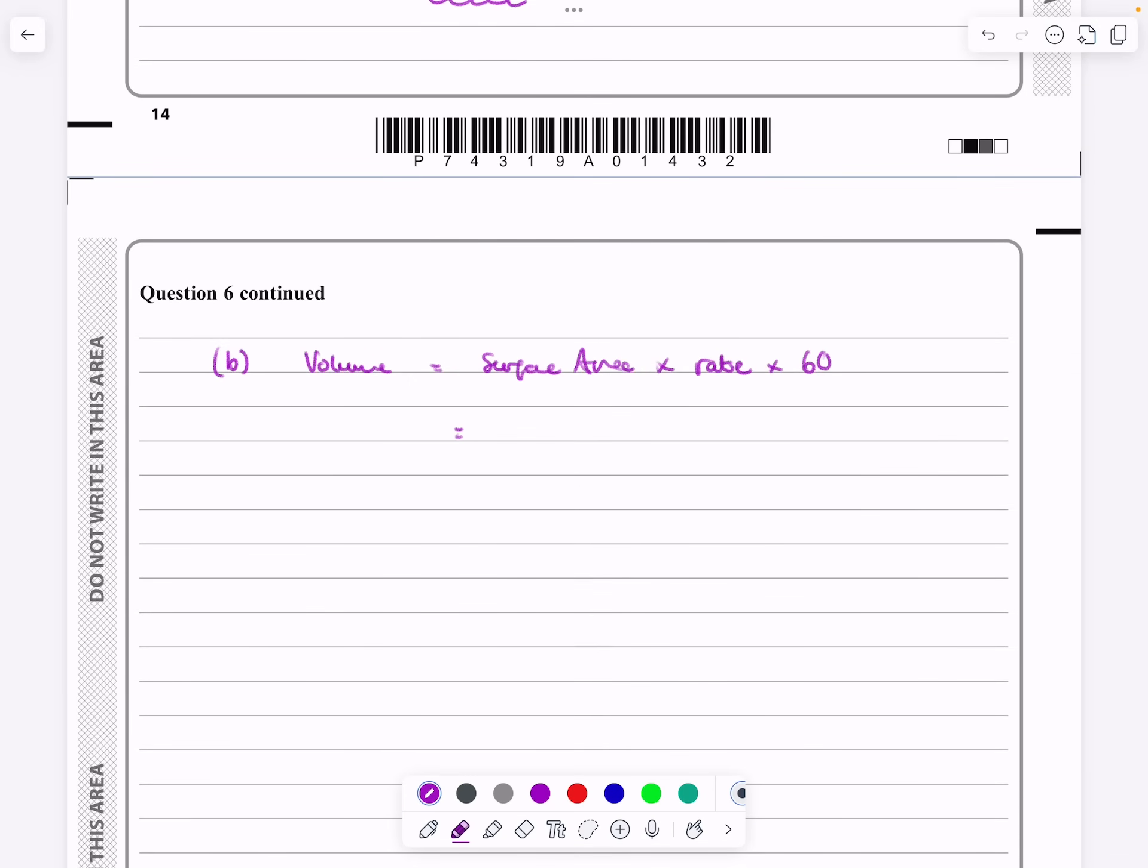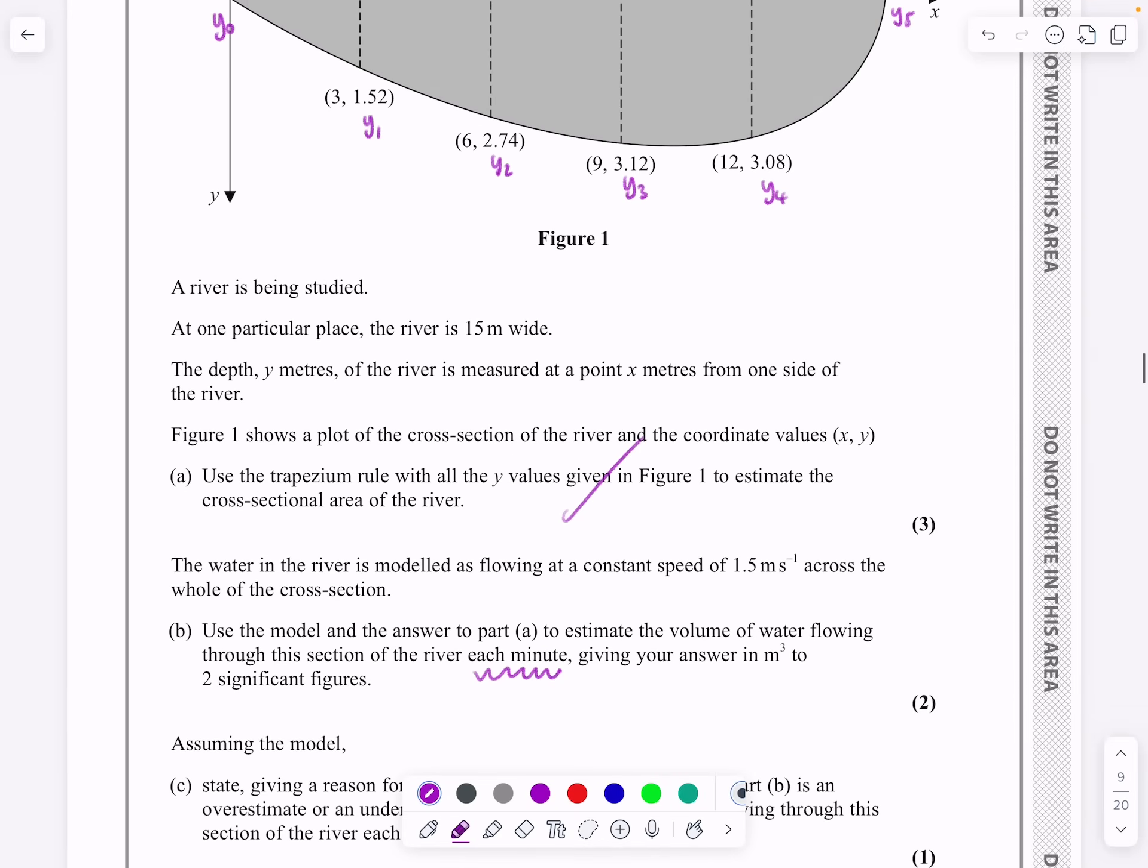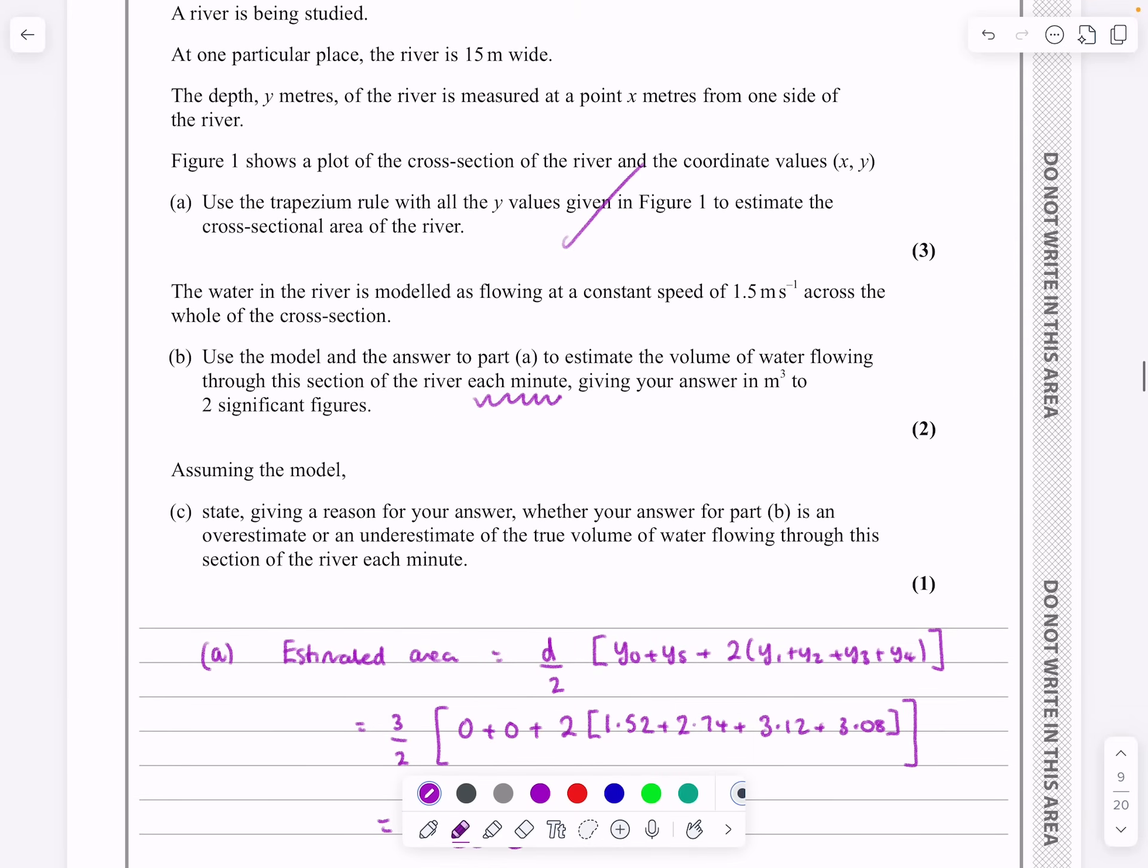So the answer to the volume generated will be that 31.38 that we just had multiplied by 1.5, and it does it for 60 seconds. So whatever that then works out to be, 2800 meters cubed, simply because on the question it said, giving your answer to two significant figures.